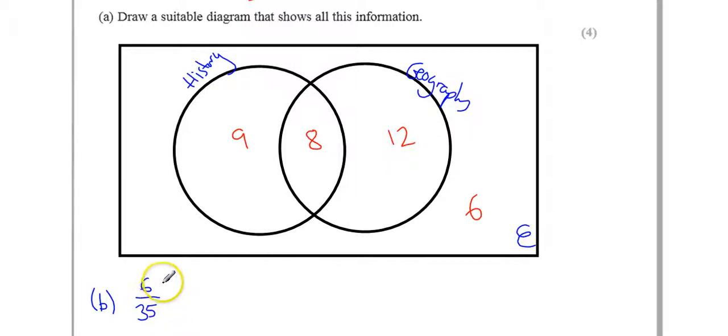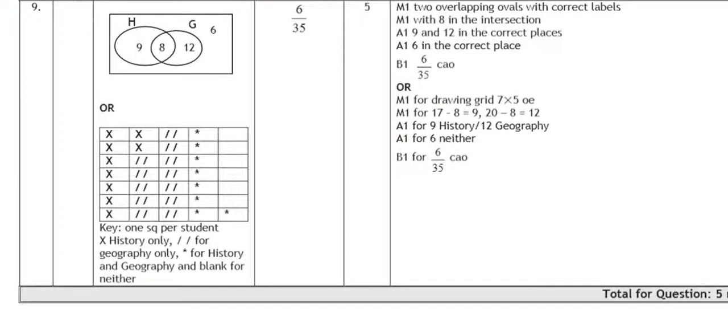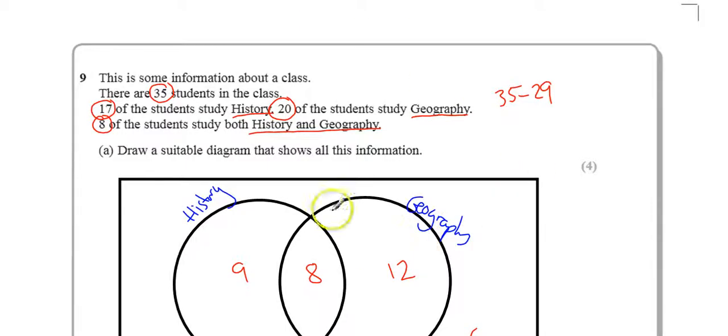So, let's have a quick look at the mark scheme, and then we'll see where the marks are available, and we'll see how we did. So, if I just change the page. Okay. So, the first one is our diagram here. You get one mark for two overlapping circles with labels, history and geography. So, let's have a quick look at that. Two overlapping circles, history and geography. So, we just call one mark.